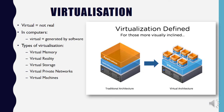Another topic under software is virtualization. Remember, the word virtual means not real — in computers, something virtual is generated by software rather than existing physically. You may play virtual games in virtual environments that look very real, like fighting a war, but it's all generated by software. Other kinds of virtualization include virtual memory, virtual reality, virtual storage, virtual private networks, and virtual machines — which we want to discuss now.